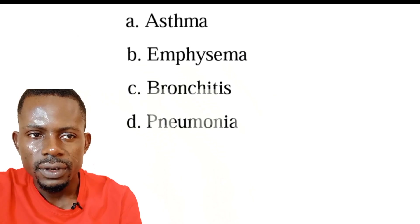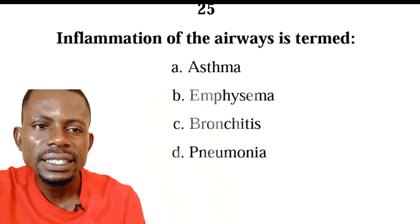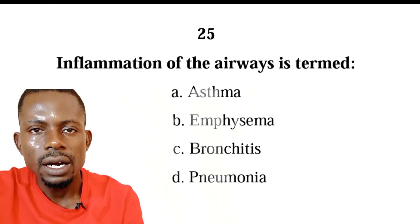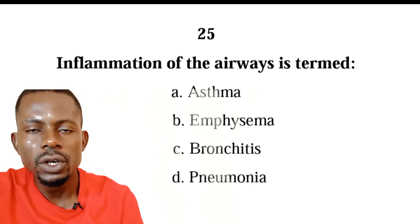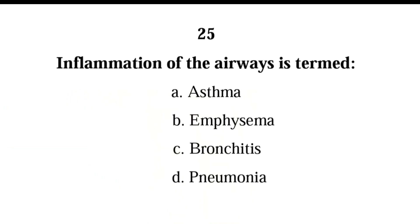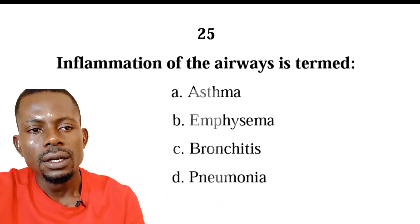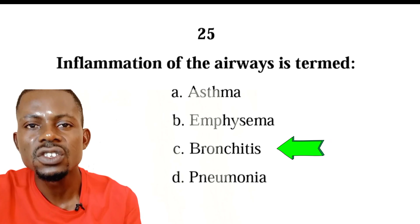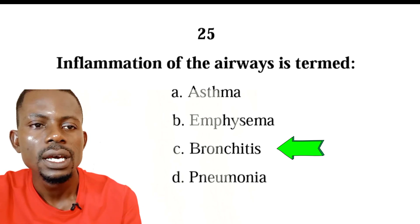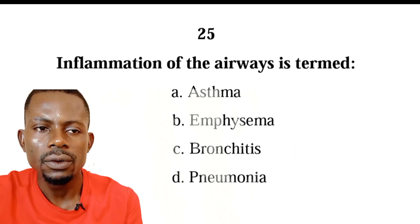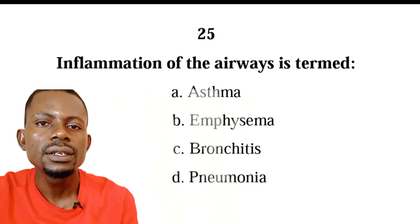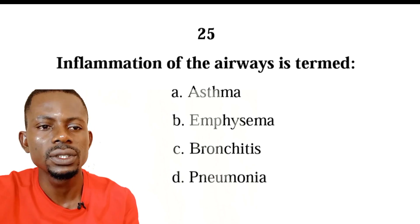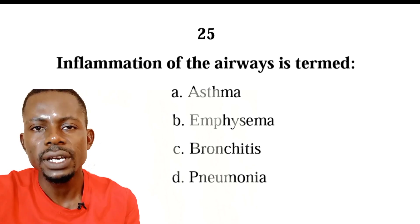Number twenty-five: inflammation of the airways is termed asthma, emphysema, bronchitis, or pneumonia? The correct answer is C, bronchitis. Bronchitis is simply the inflammation — the swelling — of the airways. Asthma is narrowing of the airways, emphysema is when you have fluid in your lung tissues, and pneumonia is simply infection of the lungs.